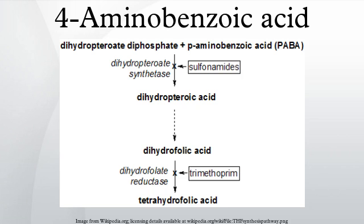In industry, PABA is prepared mainly by two routes: reduction of 4-nitrobenzoic acid, and Hofmann degradation of the monoamide derived from terephthalic acid.